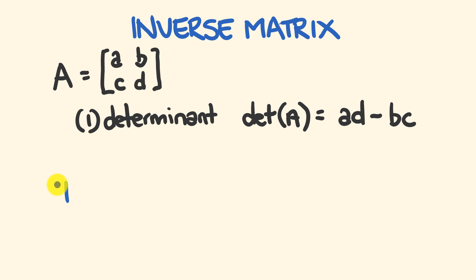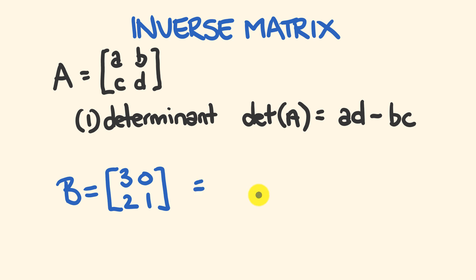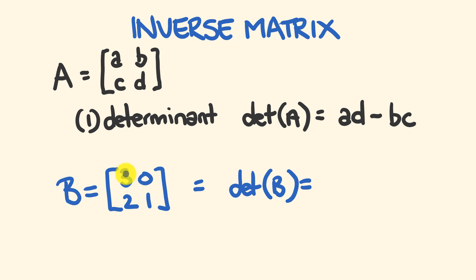Imagine we have a two by two matrix and I'm going to denote the elements using letters: A, B, C, and D. The first step is to work out the determinant. It's pretty simple: we multiply A by D, and from that we subtract B multiplied by C. For example, with matrix B having elements 3, 0, 2, and 1 — the determinant equals A times D, which is 3 multiplied by 1, equal to 3, minus B times C, which is 0 multiplied by 2, equal to 0. So the determinant is equal to 3.